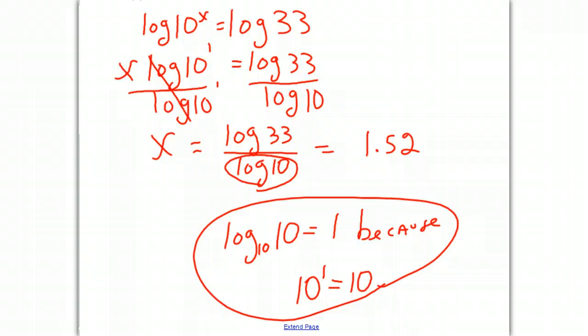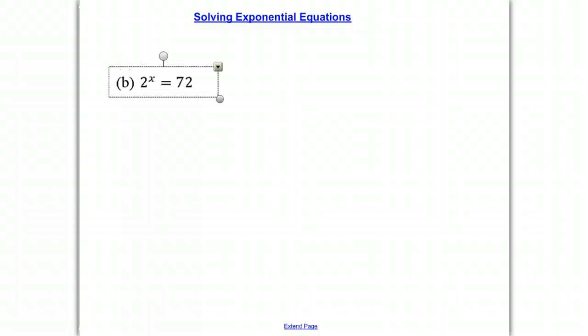Let's try another one with the power rule. This one says 2 to the x is equal to 72. Once again, we can find the log of both sides. So the log of 2 to the x is equal to the log of 72.